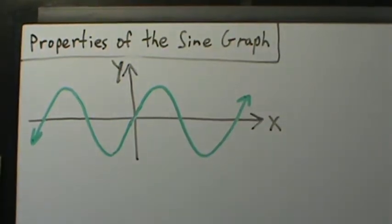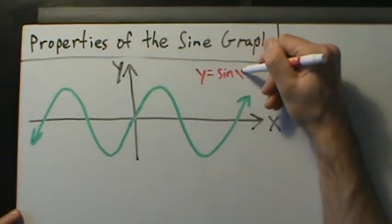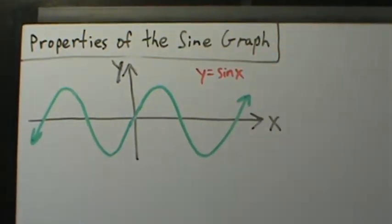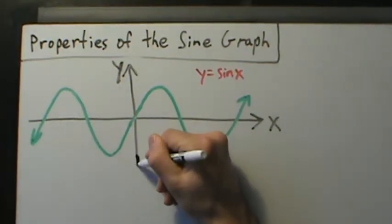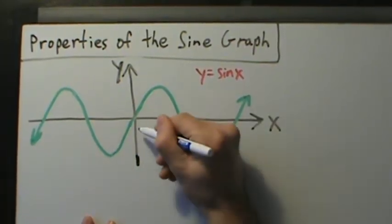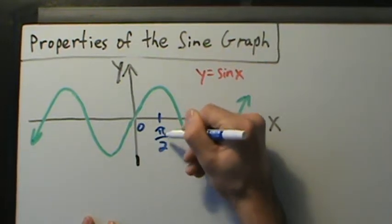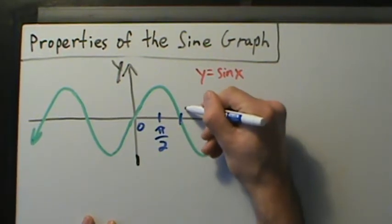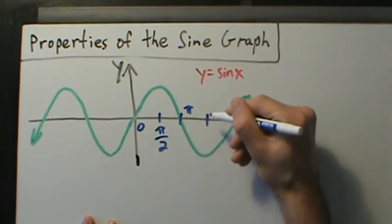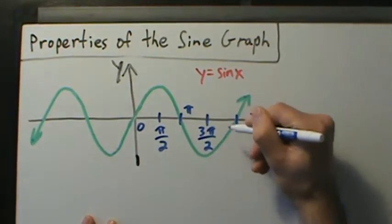Here is the graph of our function y equals sine of x. Let's label some of these important points. So here is zero, this is going to be pi over 2, this right here is x equals pi, that's 3 pi over 2, and this right here is 2 pi.